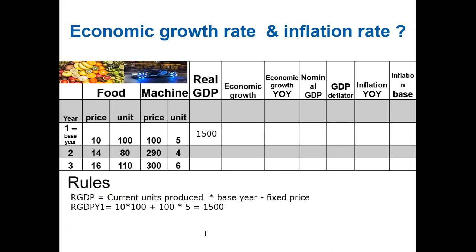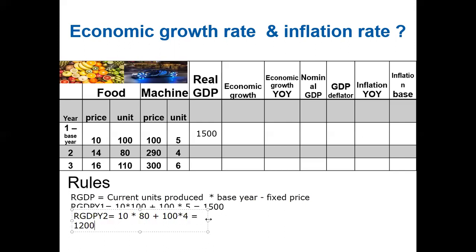For real GDP in year two, we ignore current prices and use fixed (base year) prices. So it will be 10 times 80, plus 100 times 4, giving a real GDP of 1200 for year two. This reflects a decrease in production — the number of units produced declined.